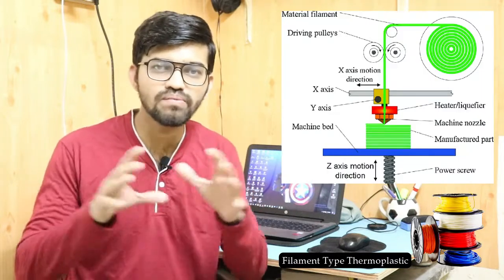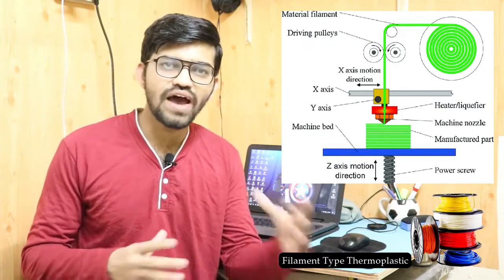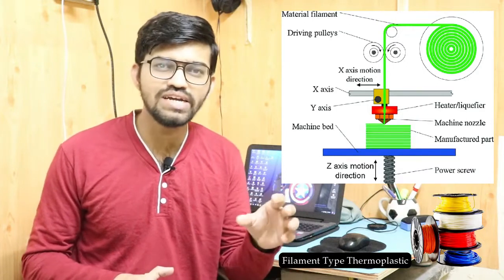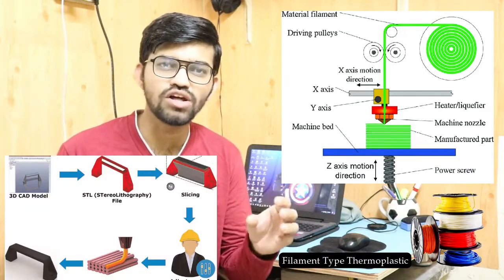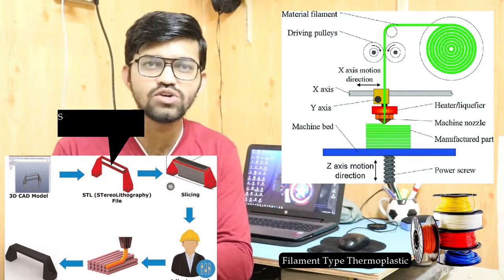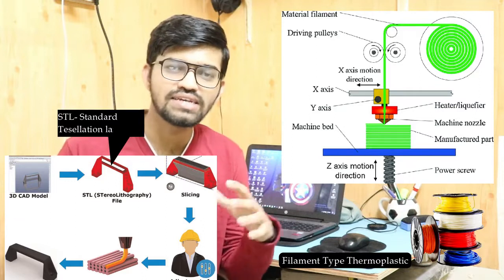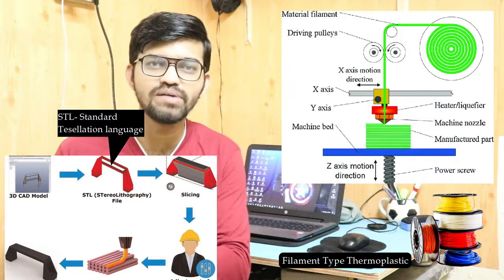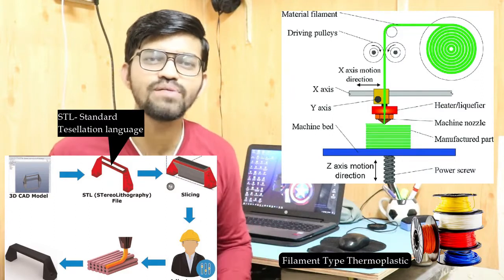The material used in FDM is a filament-type thermoplastic that comes in a coil stock. This coil stock is the input to the 3D printing machine. As we saw in the stereolithography video, the 3D model is created as a CAD file, and the data from that CAD file is converted into an STL file — Standard Tessellation Language.